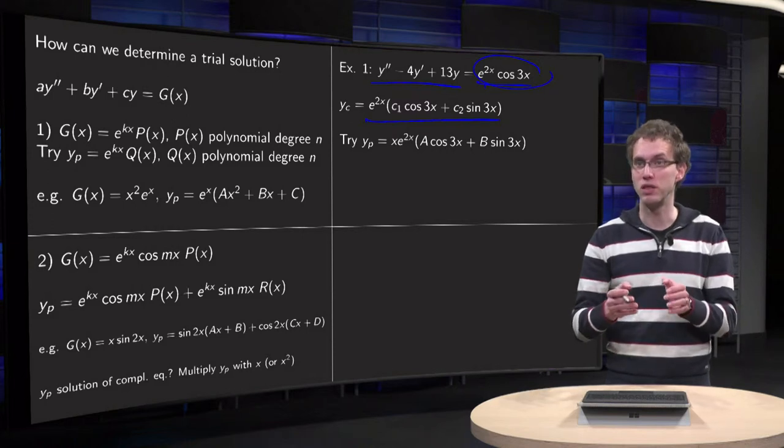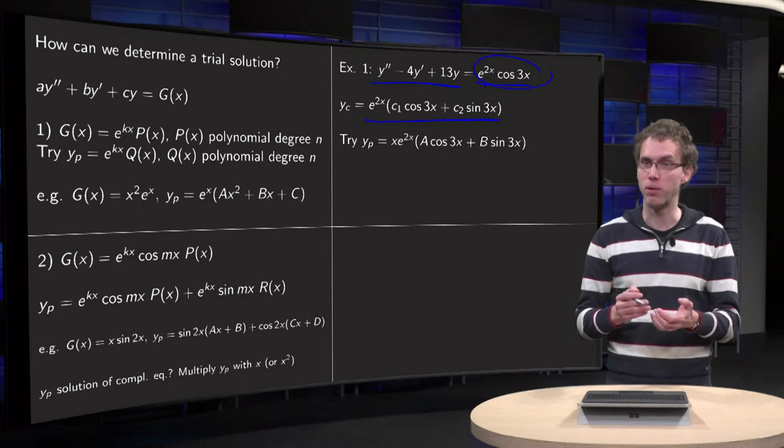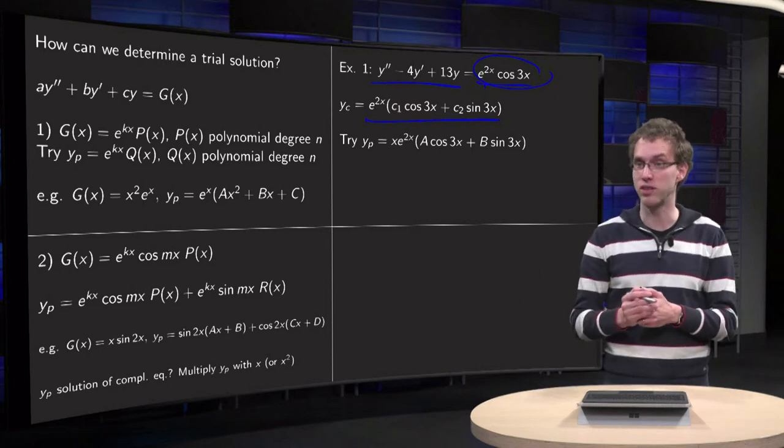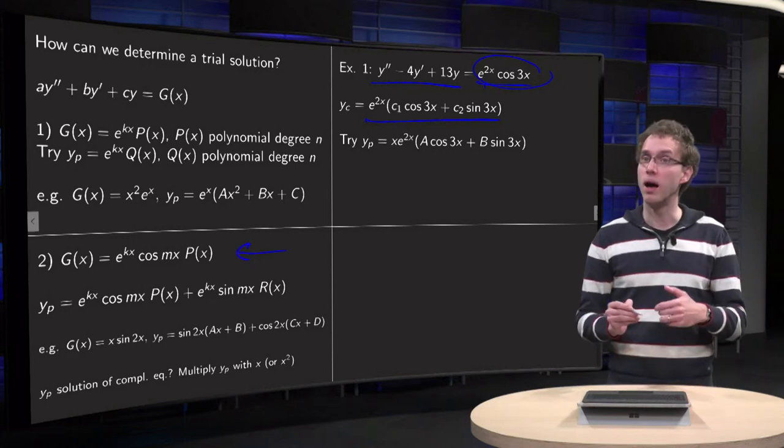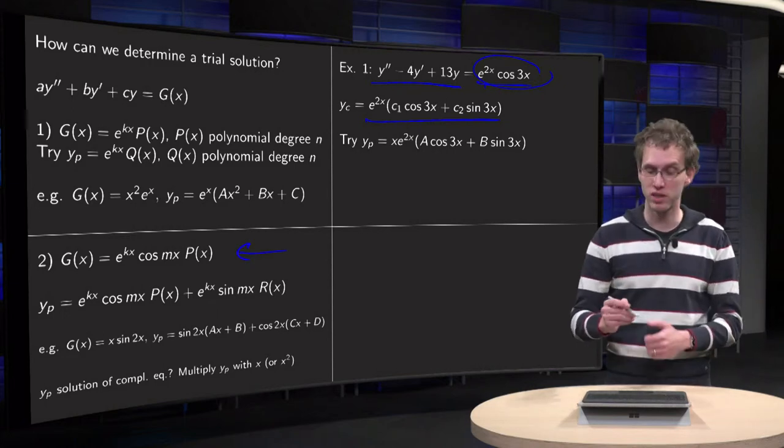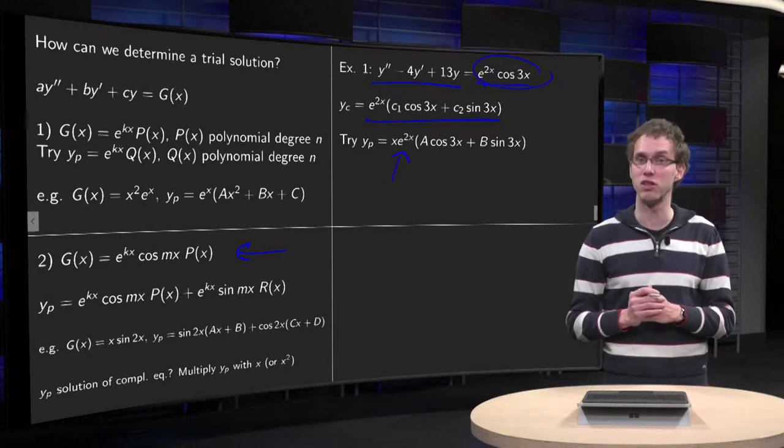So what would you do in that case as a trial solution? Well, your trial solution in general would be A times cosine 3x times e to the power 2x plus B times sine 3x times e to the power 2x, according to this rule. But it's a solution of the complementary equation, so what you do is add an additional factor of x for a particular solution.